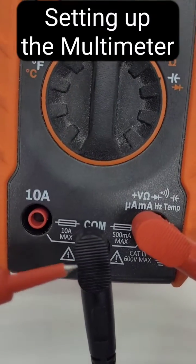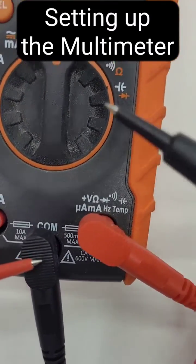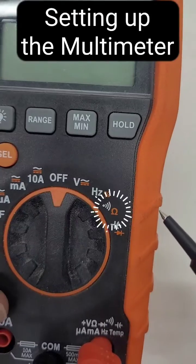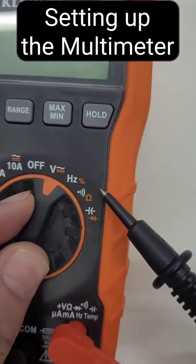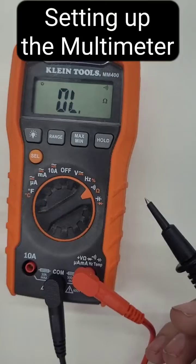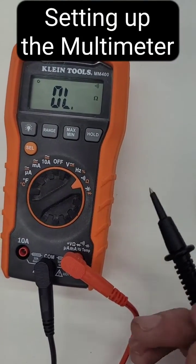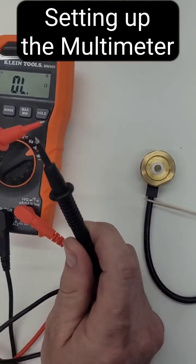That's the ground, so you want them plugged into those two locations. Then you see that little horseshoe thing? That's the one we want to turn it to. So I'm going to turn it to that - that means resistance. We're going to test resistance or continuity. The first test you want to do is...